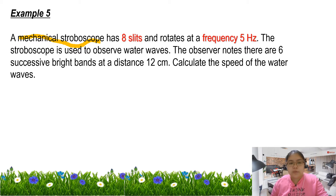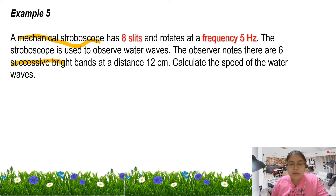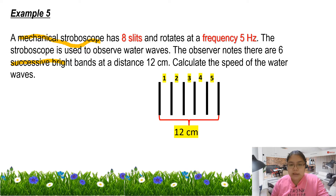After that, the stroboscope is used to observe the water wave. The observer notes there are 6 successive bright bands, and the distance is 12 cm. So we must know how many lambda are inside 12 cm. 6 successive bright bands — I'll show the diagram. This means 6 successive bright fringes, from the first one until the last one. Between the bands we count lambda — center to center counts as 1 lambda. So 12 cm actually has 5 wavelengths inside.